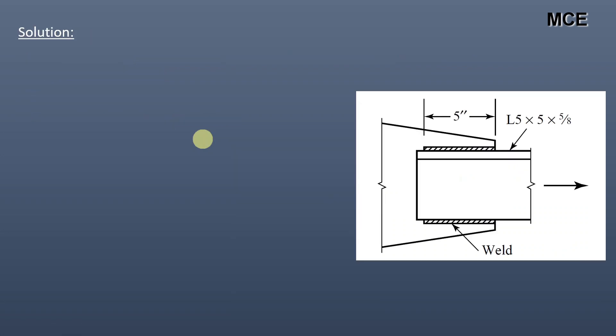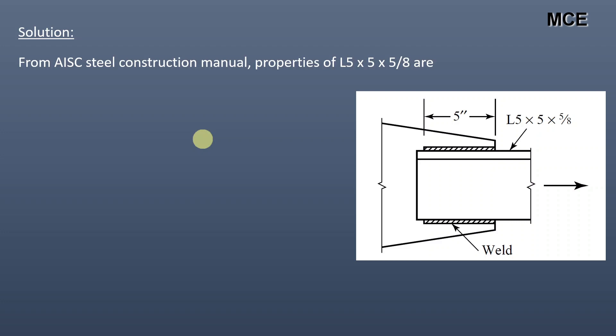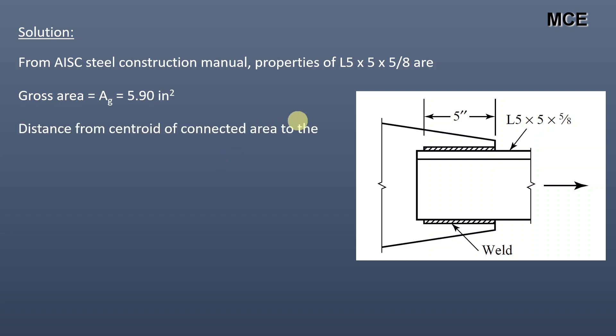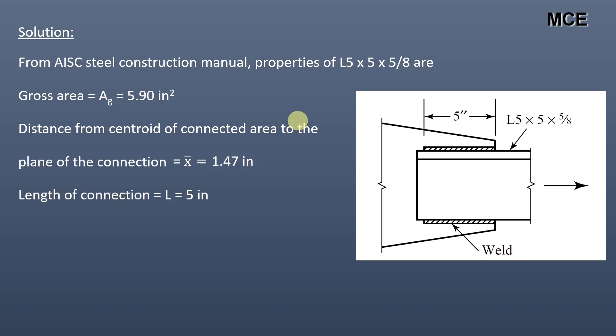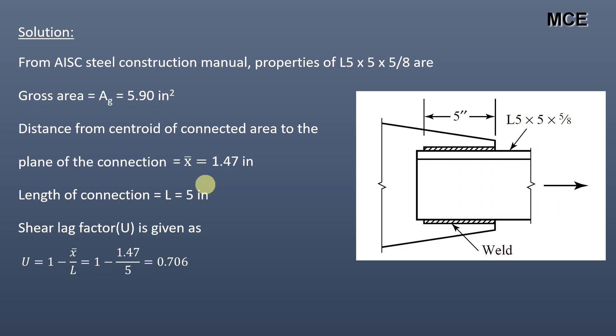To solve the question, we need some properties of this angle section. From the AISC Steel Construction Manual, the properties are: gross area is equal to 5.9 in². The distance from the centroid of the connected area to the plane of the connection is 1.47 inches. The length of connection given in the question is 5 inches. The shear lag factor is given as 1 minus x-bar divided by L, which equals 1 minus 1.47 divided by 5, which equals 0.706.